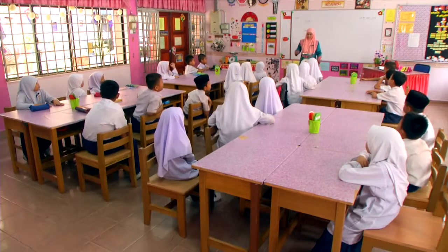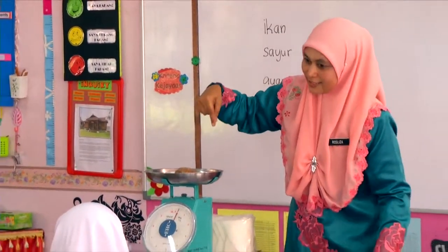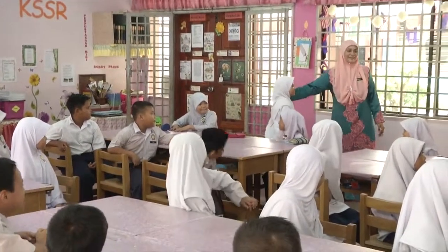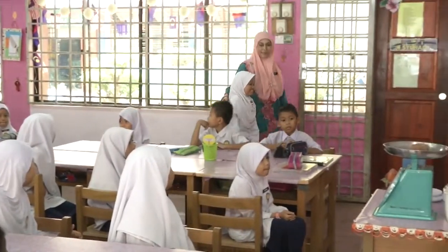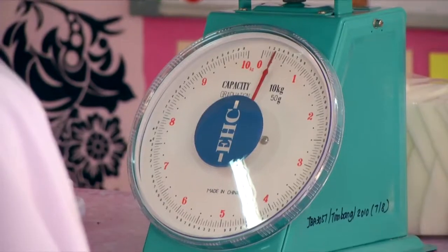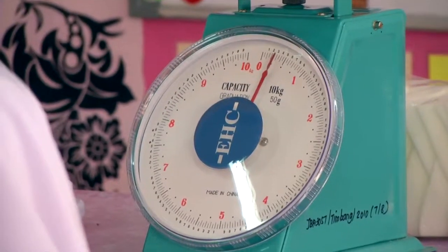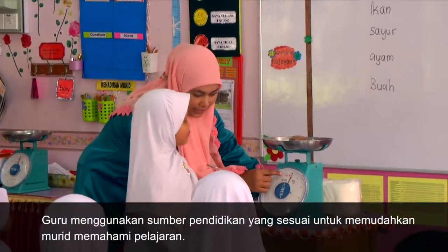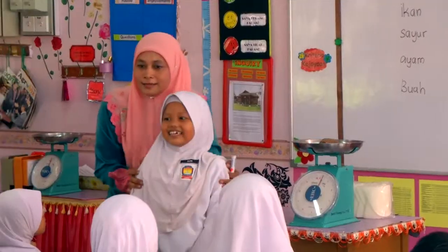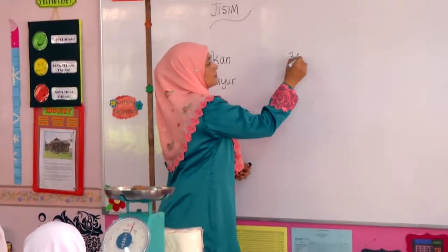Tadi awak cakap batu lebih berat kan? Semua jawab batu. Tengok berapakah berat batu. Cikgu letak. Ada bacaannya — awak tengok sampai nombor 3. 3 tu menunjukkan 300 gram, sebab belum sampai nombor 1 kg. Walaupun penimbang ni menunjukkan kg — kg tu unit kilogram. Jadi 3 ialah 300 gram.